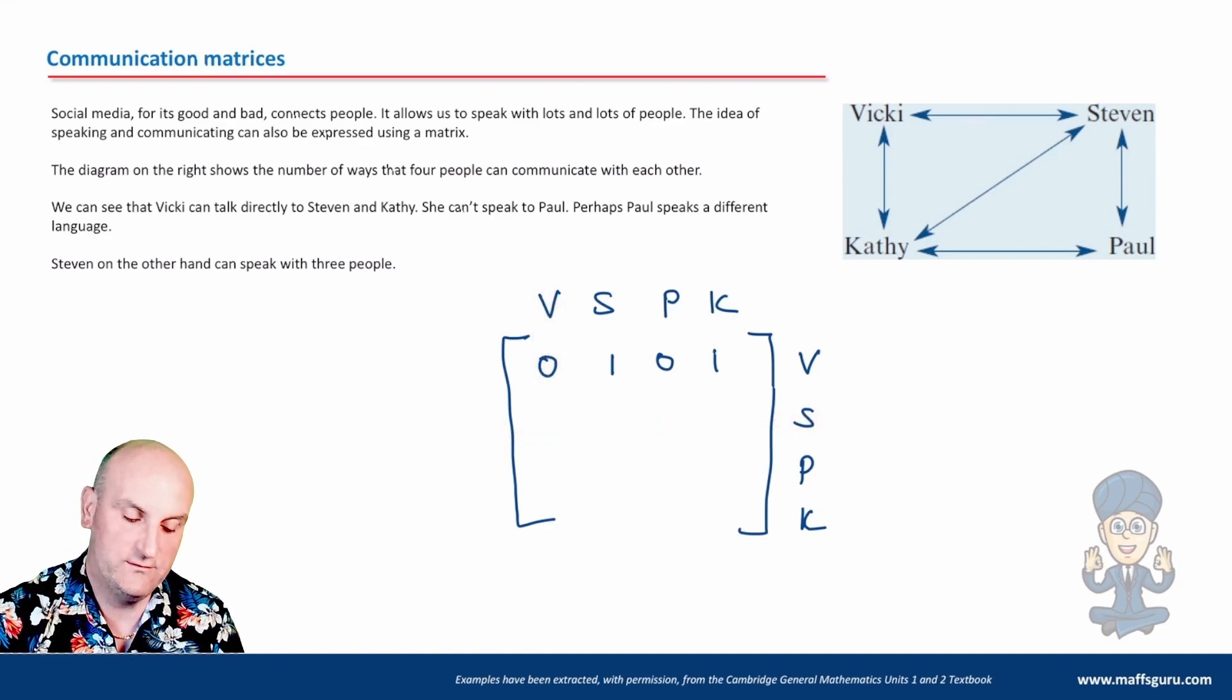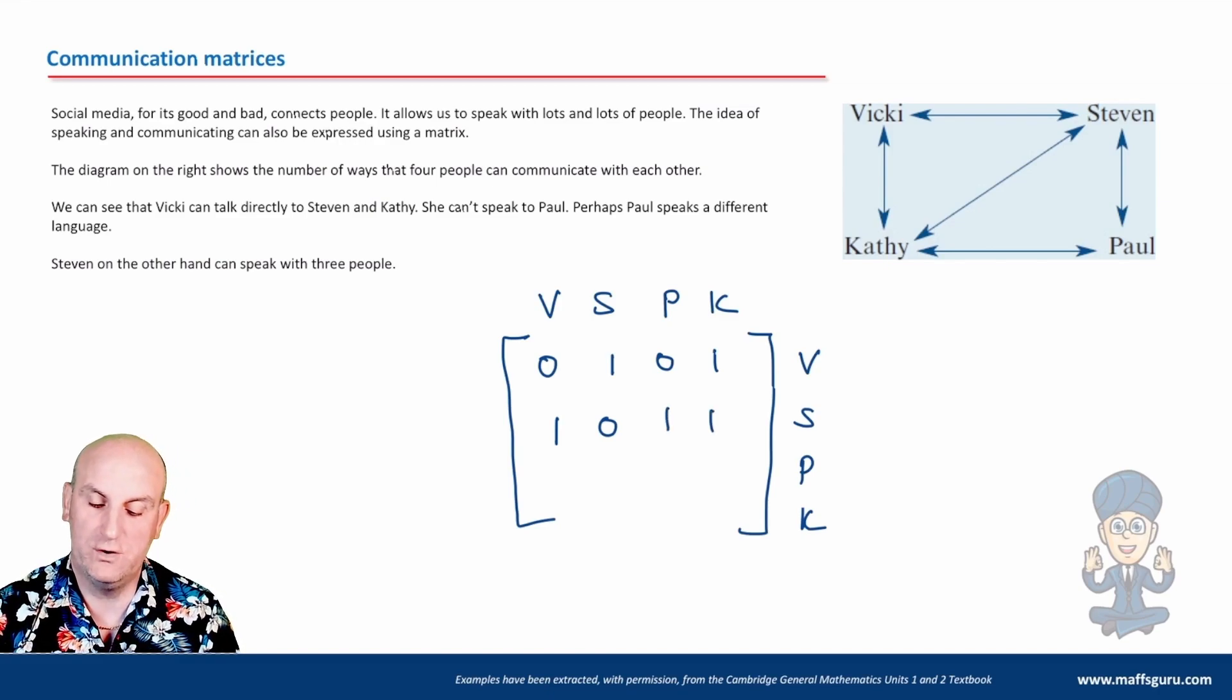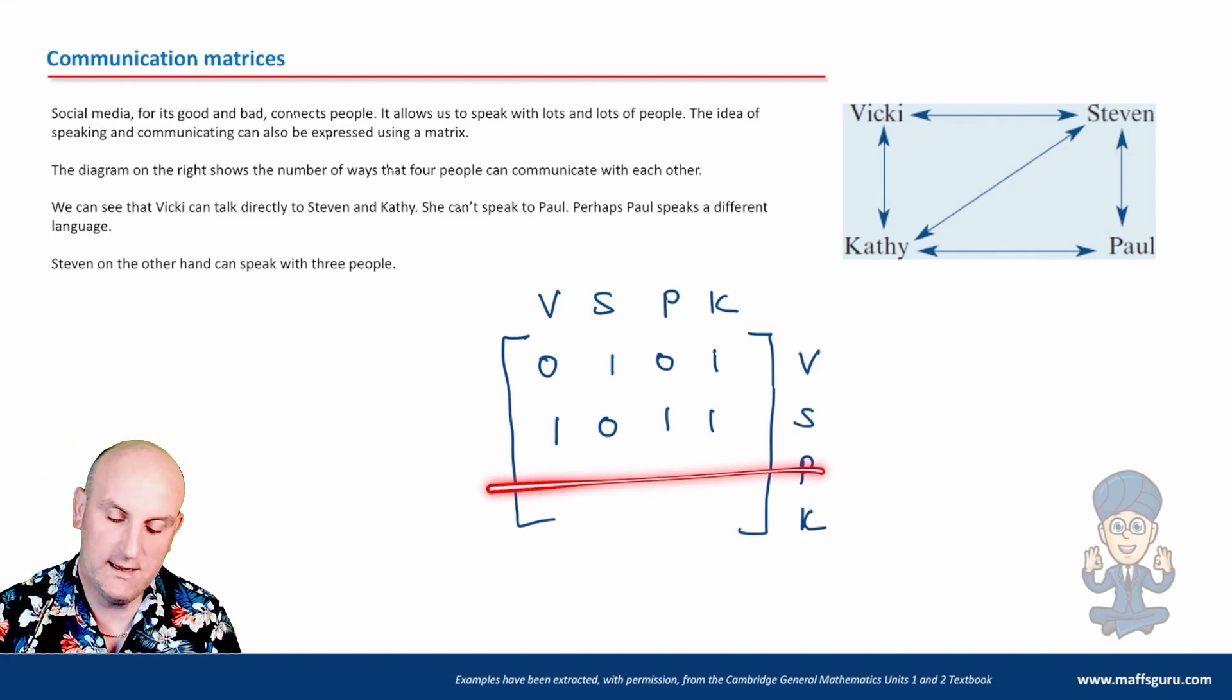So we've got Stephen. Can Vicky talk to Stephen? Yes. Can Stephen talk to Stephen? No. Can Paul talk to Stephen? Yes. Can Kathy talk to Stephen? Yes. So in fact, we already knew that Stephen could talk to everyone, basically not himself.